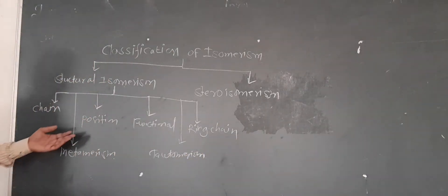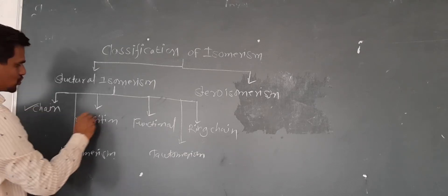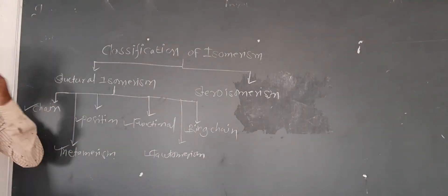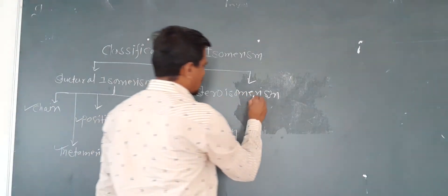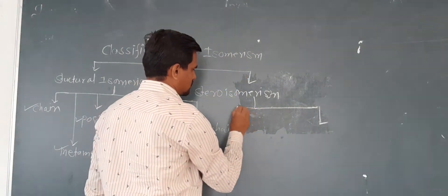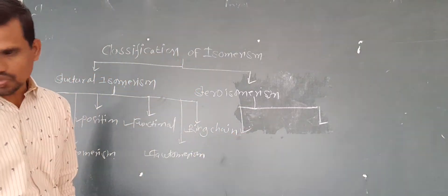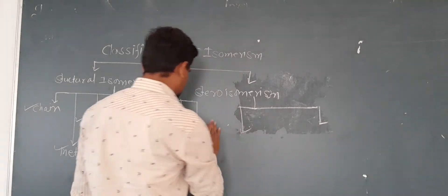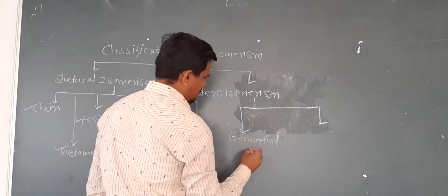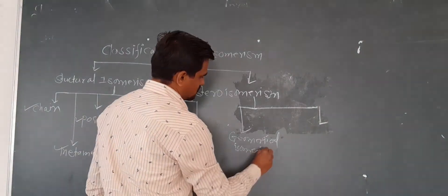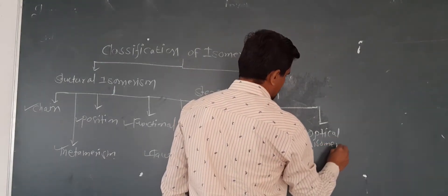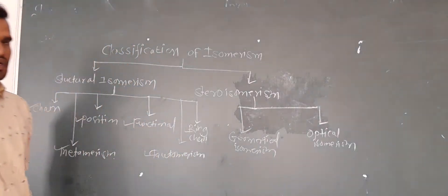So these are the several types of structural isomerism: the first is chain isomerism, then position isomerism, then functional isomerism, then ring-chain isomerism, tautomerism, and metamerism. Stereoisomerism is also classified into two types: the first is geometrical isomerism and the second is optical isomerism. So this is the complete classification of isomerism.